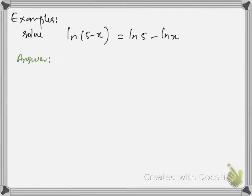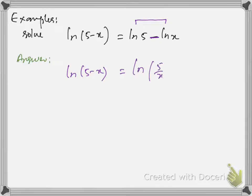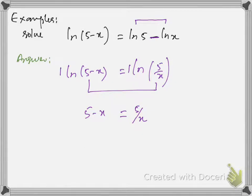Now let us solve a few examples. To solve this equation we must have a single log on both sides. We have a single log on the left side, but we have two logs on the right side. We need to use laws of logarithm to convert these two logs into a single log, using the quotient law according to the negative sign. So by using the quotient law on the right side we have ln(5/x). Now we have single logs on both sides with coefficients 1, therefore we can equate their functions as 5 minus x equals 5 over x. Don't cancel the logs — just equate their functions.